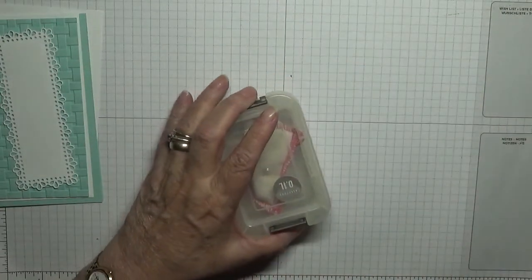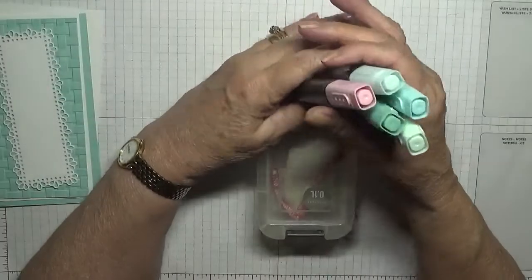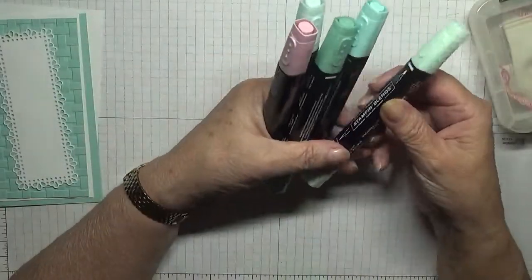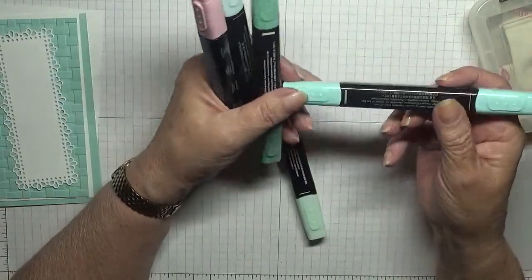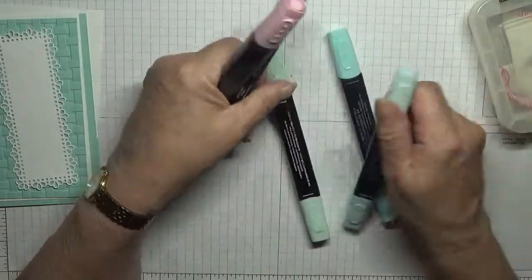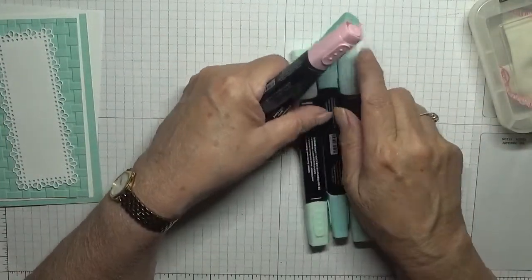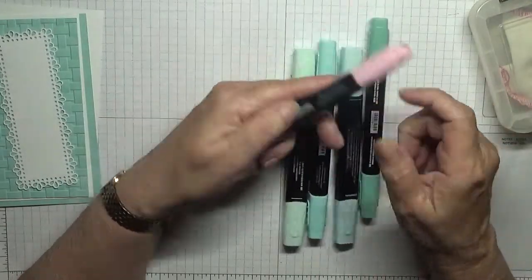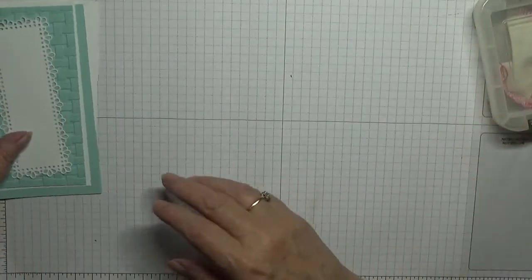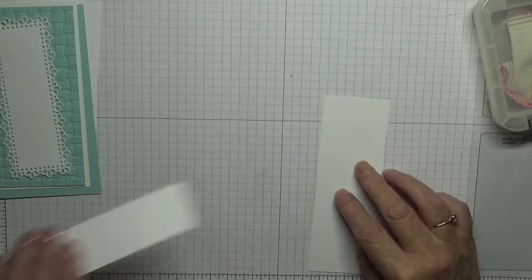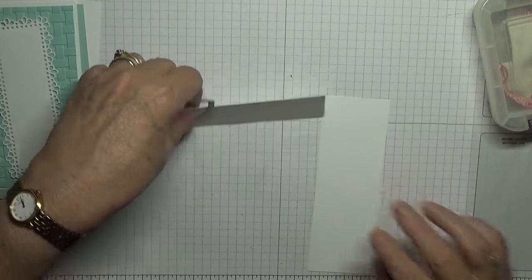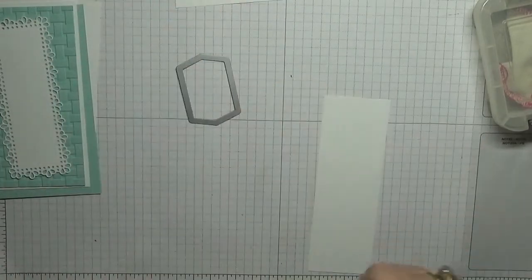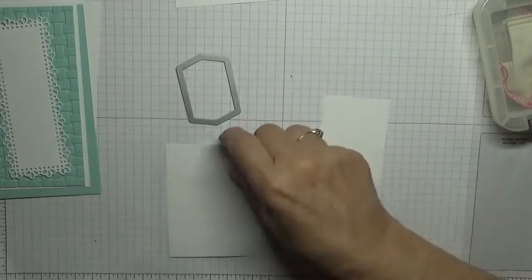I've also got some blenders. I'm going to be using Light Mint Macaron, Light Pool Party, Dark Pool Party, Just Jade, and a pink. To get started I've got some scraps of white here as well.